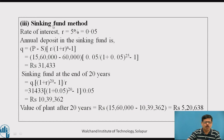Using the sinking fund method with a rate of interest of 5% (R = 0.05), the annual deposit Q = (P − S) · R / [(1+R)^N − 1]. Substituting the values of initial cost, salvage value, R, and N, the annual deposit in the sinking fund is 31,433 rupees. The sinking fund available at the end of 20 years = Q · [(1+R)^N − 1] / R = 31,433 · [(1.05)^20 − 1] / 0.05 = 10,39,362 rupees. Therefore the value of the plant after 20 years = 15,60,000 − 10,39,362 = 5,20,638 rupees.